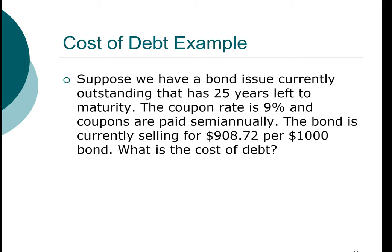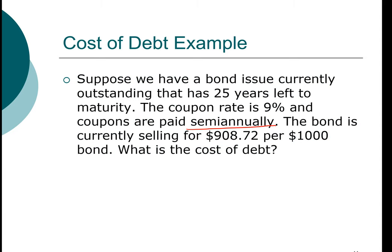When computing yield to maturity, remember that a coupon bond is an annuity, so we want to determine the payment frequency. In this particular bond, interest is paid on a semi-annual basis. Given that this bond has 25 years left to maturity, that means it has a total of 25 times 2, or 50 payments left. The coupon rate is 9%, so the payment per period is $90 per year divided by 2, or $45 every 6 months.